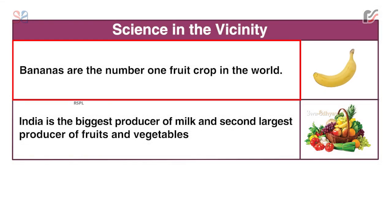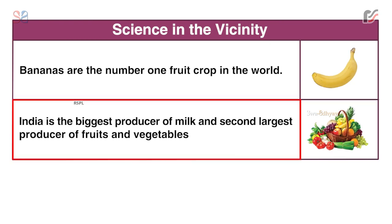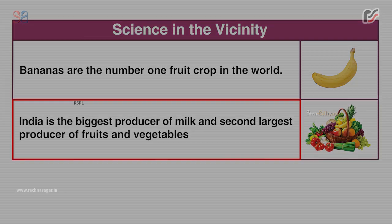Science facts: Bananas are the number one food crop in the world. India is the biggest producer of milk and the second largest producer of fruits and vegetables.